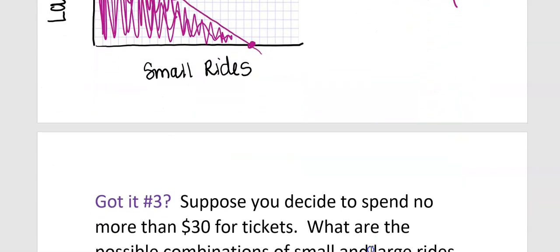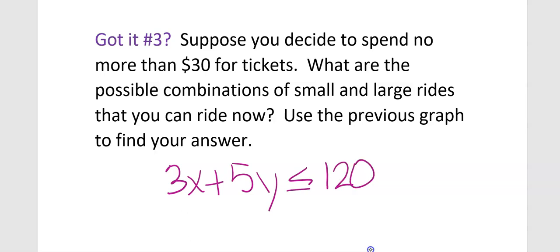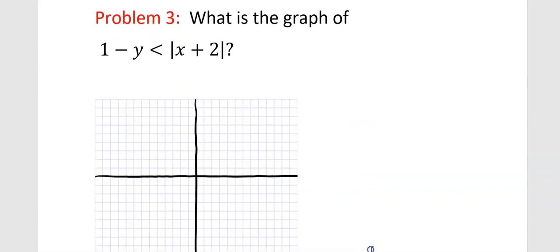The next one is similar, but suppose you decide to spend no more than $30. If you spend $30, how many tickets would you get? 120. So the equation would be 3x plus 5y less than or equal to 120, which gives you more opportunities for rides because you have more tickets. You could do this using tables, but I strongly recommend that you don't — it's easier on the graph.